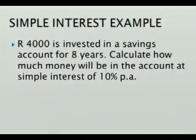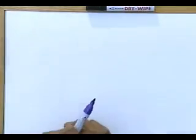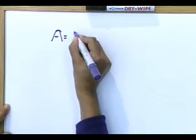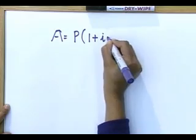Remember, have your pens ready, have your calculators ready, because you are going to do the first few examples with me — it is work we've done in grade 10 and grade 11. So here comes our first example. R4,000 is invested in a savings account for eight years. Calculate how much money will be in the account if you're going to get simple interest at 10% per annum. You saw the word simple interest — you immediately write down your simple interest formula, which says A is equal to P open bracket 1 plus I times N.